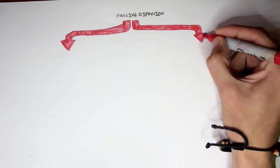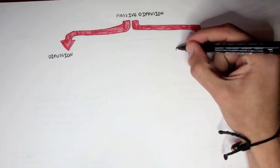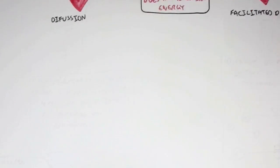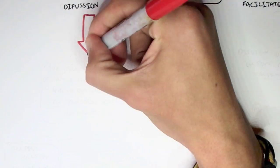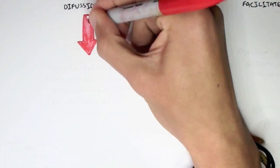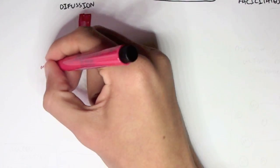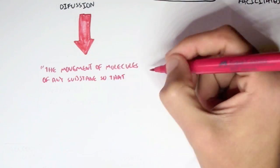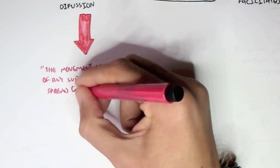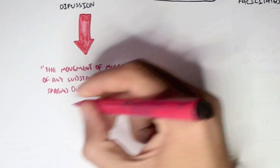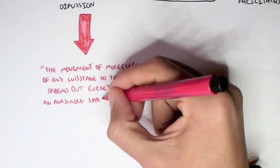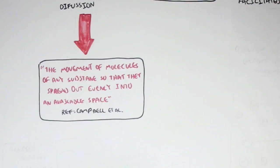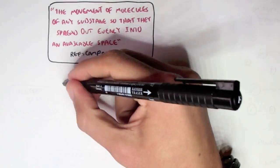In this video we will look at passive diffusion. There are two types of passive diffusion: simple diffusion and facilitated diffusion, both of which do not require energy. Diffusion is defined as the movement of molecules of any substance so that they spread out evenly into an available space. This is from Campbell Biology.